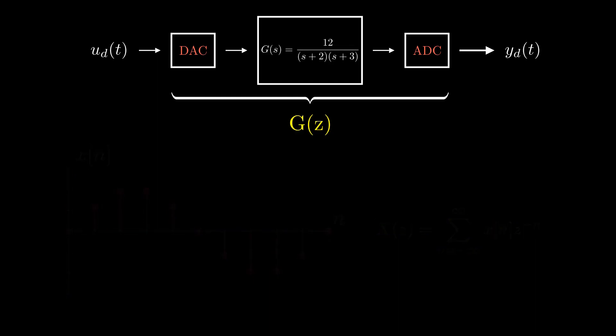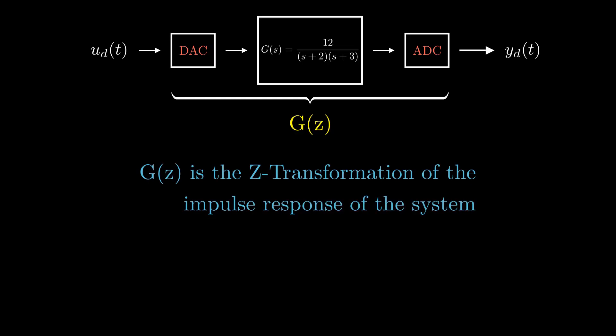Going back to discrete domain transfer function G(z), G(z) can be written as z-transform of y_d(t) divided by z-transform of u_d(t). If u_d(t) is an impulse function, z-transform of u_d(t), u_d(z) becomes 1. Thus, G(z) will be equal to the z-transform of the impulse response.